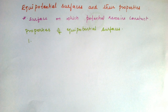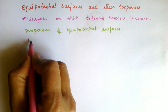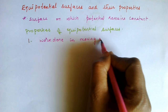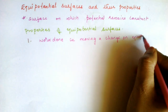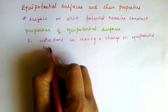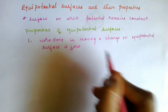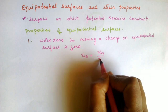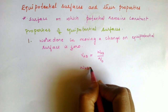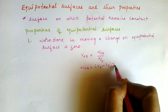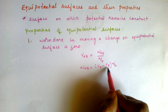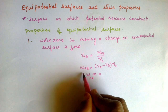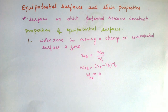The first property: work done in moving a charge on an equipotential surface is always zero. This is because VAB = WAB/Q₀, so W = (VA − VB) × Q₀. On an equipotential surface VA equals VB, therefore the work done is zero between any two points on it.